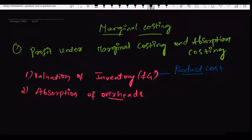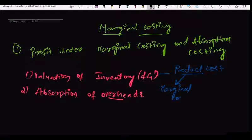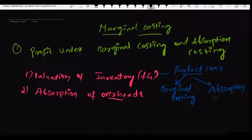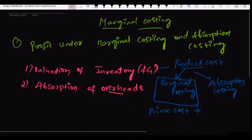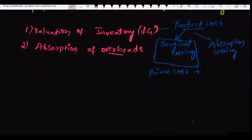What the product cost is depends upon the basis of costing you are following. If you are following marginal costing basis, your product cost is your prime cost plus variable production overheads.